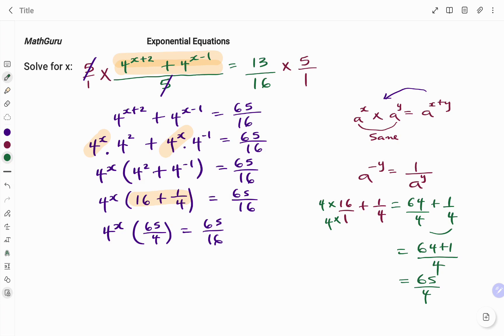Now, to isolate my 4 to the power of x, I'm going to divide both sides by 65 over 4. So, what I'm doing is to take 65 over 4 to the right hand side. So I'm left with 4 to the power of x equals 65 over 16 divided by 65 over 4, that would be times 4 over 65.